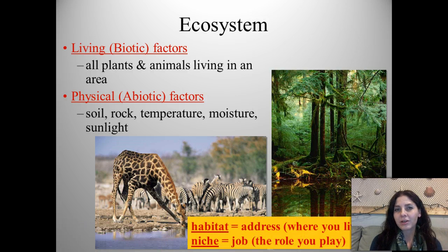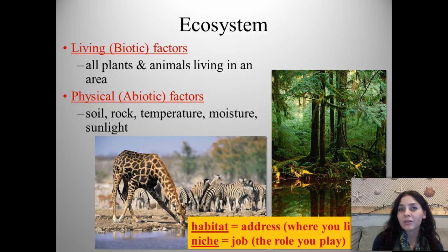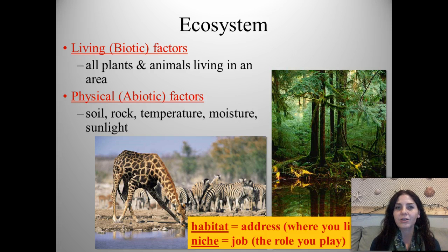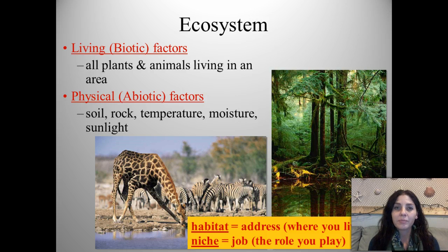While talking about ecosystems, we're going to discuss a plant or animal's habitat as well as their niche. A habitat is the address — or where that organism lives. The niche is the role or job that organism plays in that ecosystem. For example, fungus and bacteria play a very important role in decomposing different types of materials. Bacteria also plays a very important role in the nitrogen cycle.